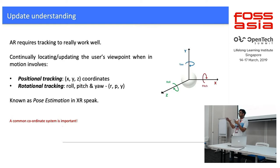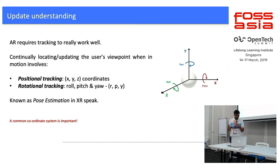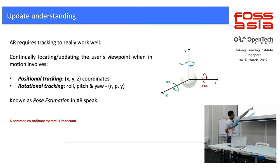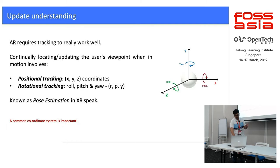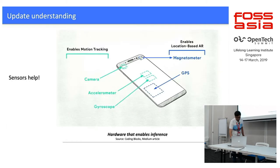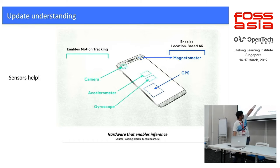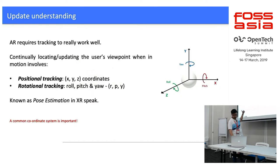Because the user environment is not predictable, we need to constantly track the position of the user's device at all times. This happens via positional tracking and rotational tracking, known as pose estimation in AR. The device and the virtual object being placed need some form of a common coordinate system. Normally you use sensors — camera, accelerometer, gyroscope, etc. — to inform decisions in this region.